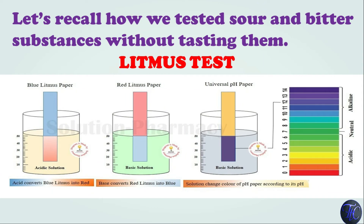Let's recall how we tested sour or bitter substances without tasting them. It is possible with the help of a litmus test. There are three types of litmus paper available: blue litmus paper, red litmus paper, and universal pH paper. Suppose you have two solutions and you don't know which one is acid and which one is base. If blue litmus turns red, then the solution is acidic. And if red litmus turns blue, the solution is basic.